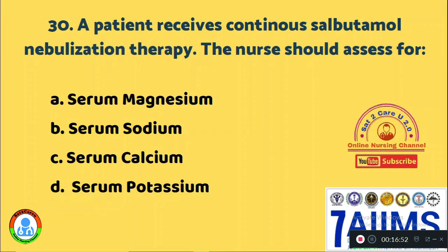Question 30: A patient receives continuous salbutamol nebulization therapy. The nurse should assess for: Option A: serum magnesium. Option B: serum sodium. Option C: serum calcium. Option D: serum potassium. When using salbutamol nebulization, the potassium level should be regularly monitored.